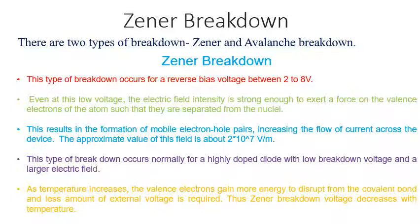This type of breakdown voltage decreases with temperature. As the temperature increases, the valence electrons gain more energy and more covalent bonds are disrupted. So it is inversely proportional to the temperature — that is, Zener breakdown voltage decreases with temperature.